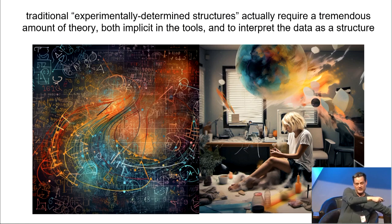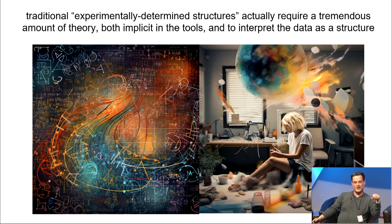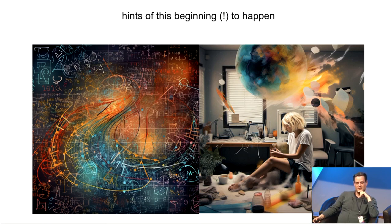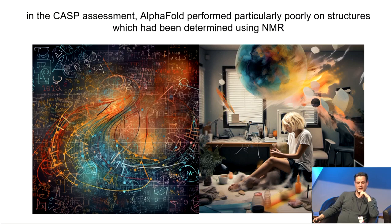But this line between abstract model and experimental reality, I think it may eventually become quite blurry. In fact, the traditional experimental ways of determining structures require an enormous amount of theory, as is often the case across all of the sciences, both implicit in the tools and to just do the data processing. If you believed that in some sense AlphaFold or some successor offered a better theory, you might believe the results from that deep learning system more than you believe a traditional experimentally determined structure. It sounds a little bit like science fiction, but actually there are hints of this beginning to happen.